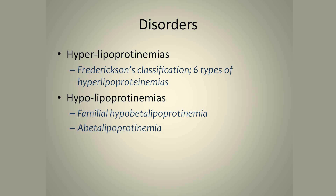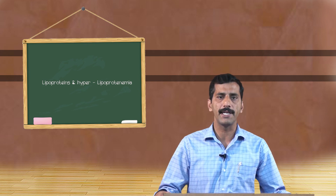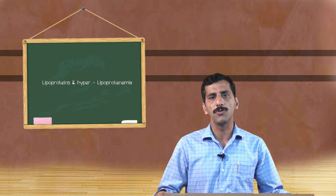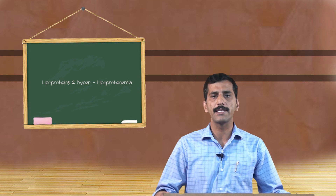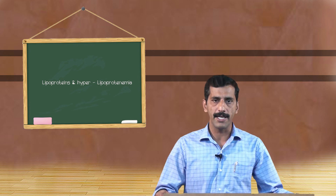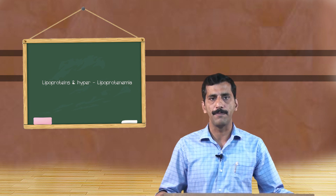Type 3: increase in the concentration of VLDL in the blood. Type 4: increase in the concentration of both VLDL and LDL. Type 5: increase only in the LDL remnant, called intermediate density lipoprotein.